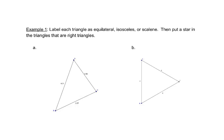In example one we're going to label each triangle as equilateral, isosceles, or scalene, and then we'll put a star inside the triangles that are right triangles. If we look at our first example A, we can see that this side is 3.09, this side is 4.31, and this side is 3.57. Those sides are all different, so it's a scalene triangle.